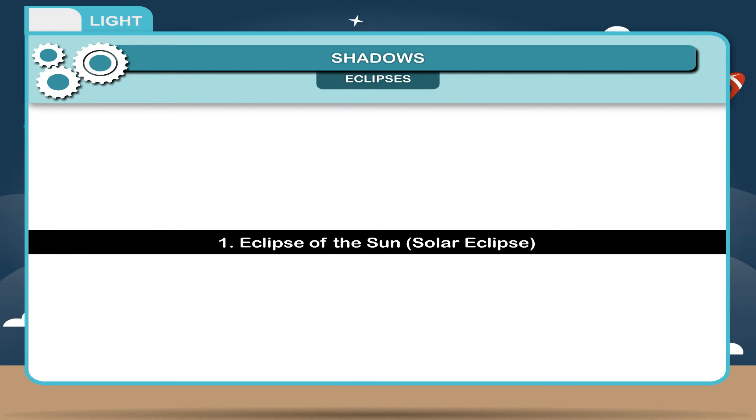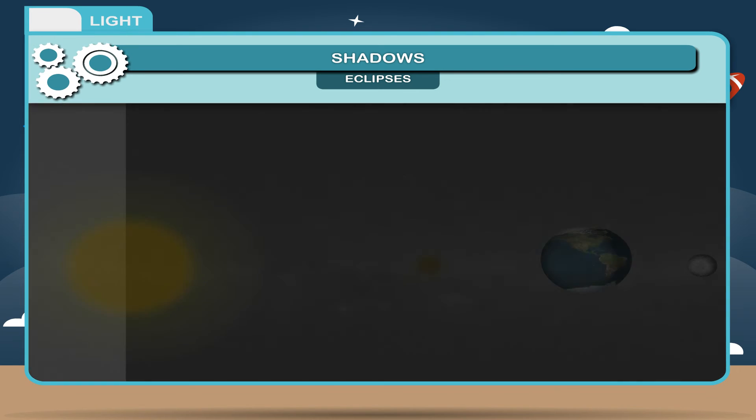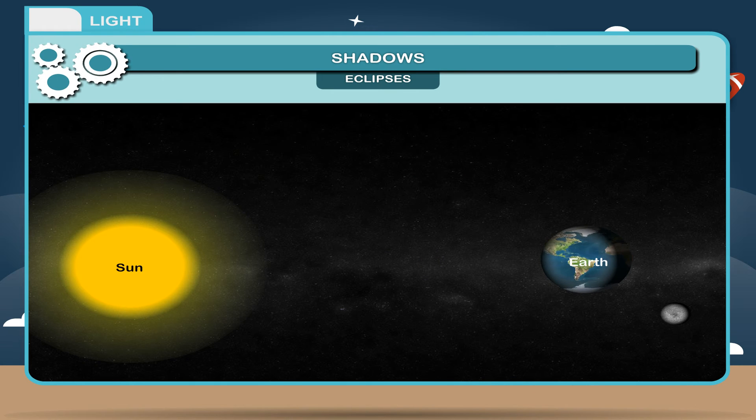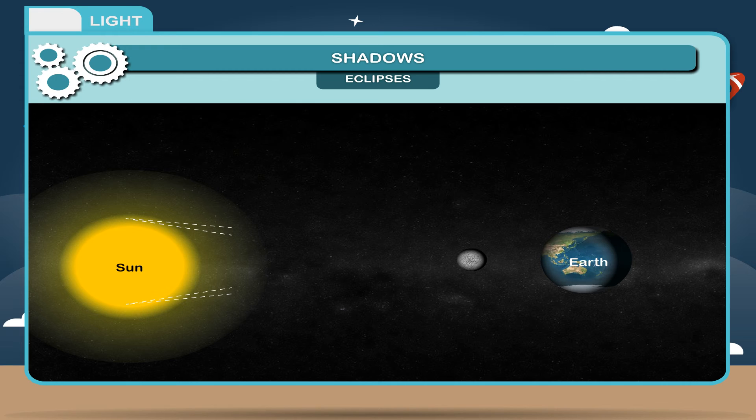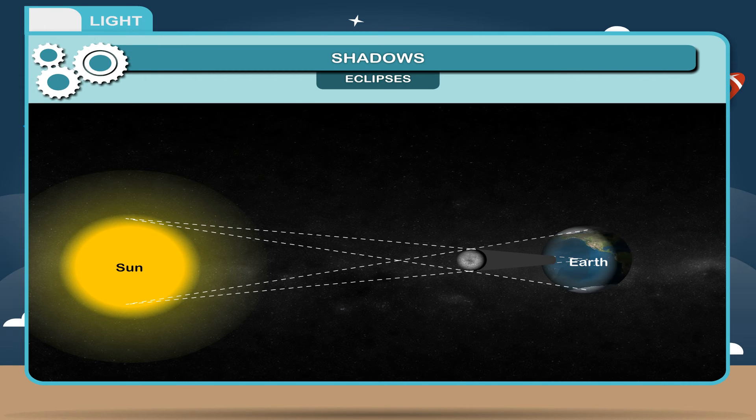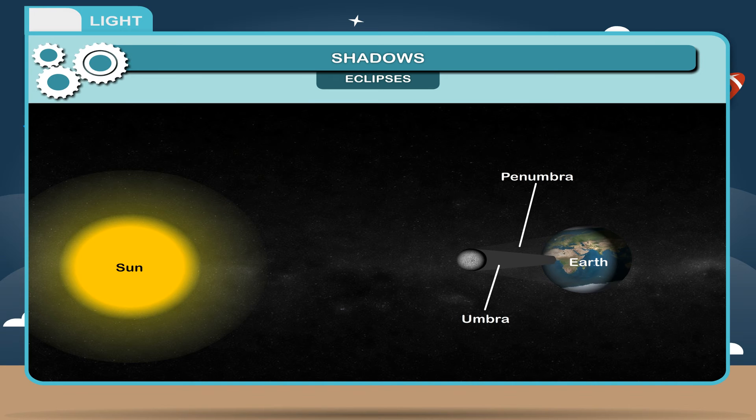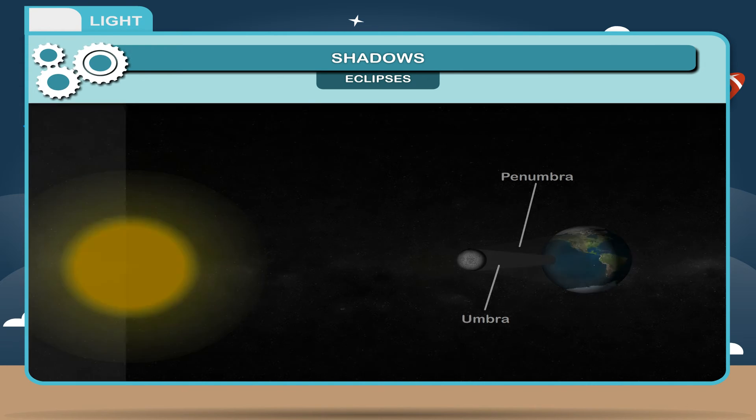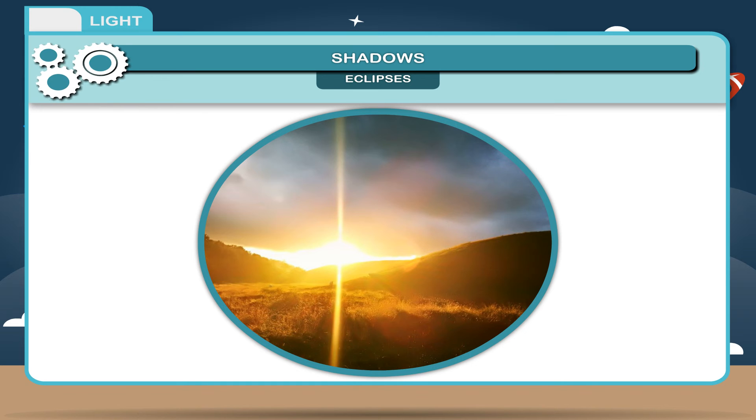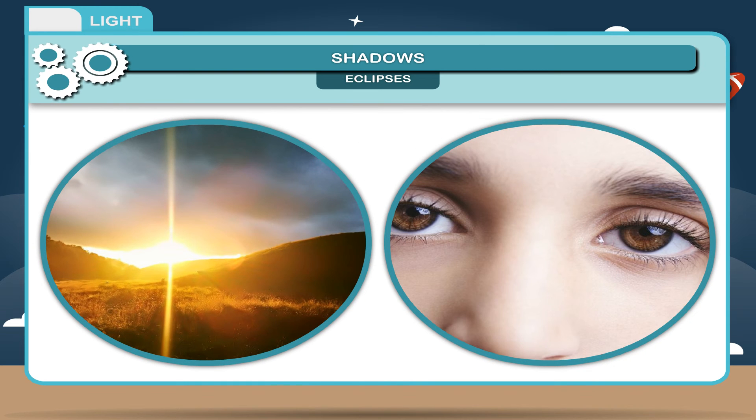1. Eclipse of the sun. Solar eclipse: If the moon comes between the sun and the earth, so that the earth darkens during the day, solar eclipse occurs. Since the sun is large, tiny shadow has an umbra and penumbra. If you stand in the umbra, the sun is totally blocked and it is called total eclipse. If you stand in the penumbra, you see partial eclipse. Never see directly at the sun because it may damage your eyes.